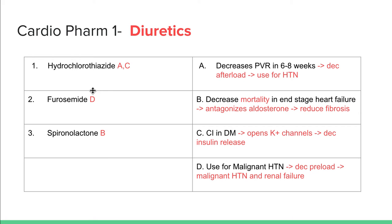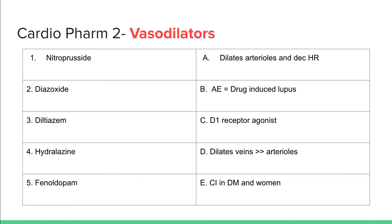Furosemide is our loop diuretic — it's great to decrease preload. This is used in cases of malignant hypertension, heart failure, and renal failure. Spironolactone decreases mortality in end-stage heart failure because it antagonizes aldosterone. Any drug that antagonizes aldosterone will help decrease mortality and reduce remodeling, essentially reducing fibrosis in the heart.